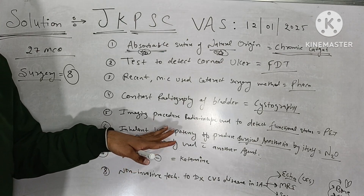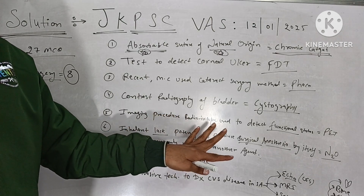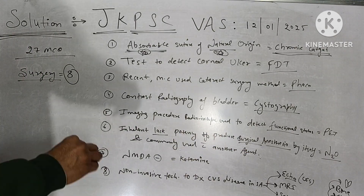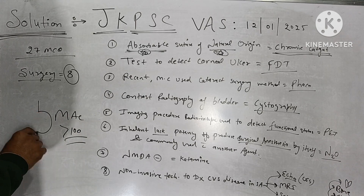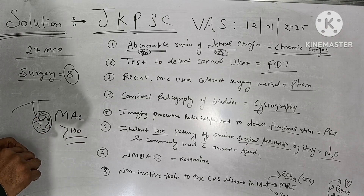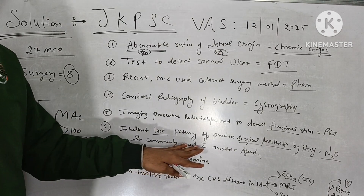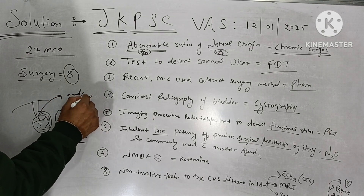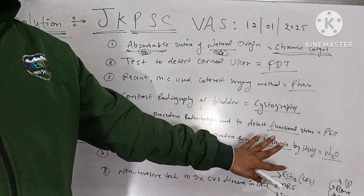The inhalant anesthetic that lacks the potency to produce surgical anesthesia by itself is nitrous oxide. Nitrous oxide alone cannot produce surgical anesthesia because the MAC value of nitrous oxide is more than 100, which is not achievable at the alveolar level. It is commonly used with another agent. Two effects related to nitrous oxide are the second gas effect and diffusional hypoxia.